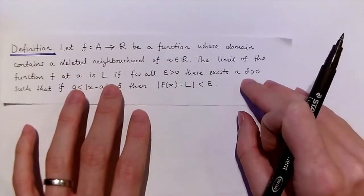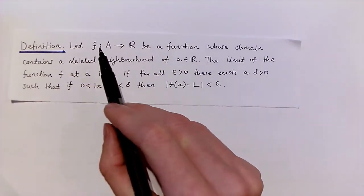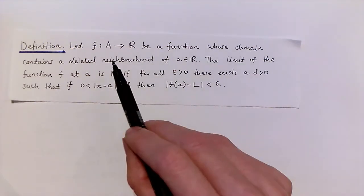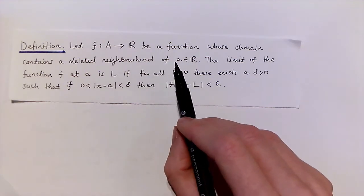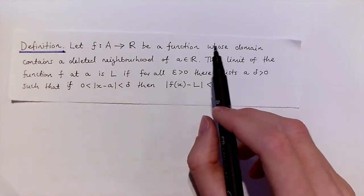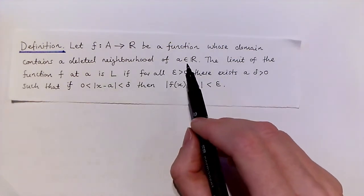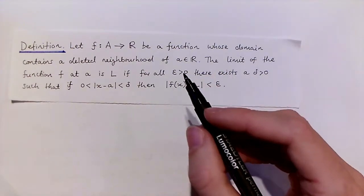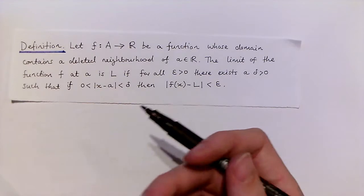Let's start by reading this definition. Let f be a function from capital A to the real numbers, whose domain contains a deleted neighbourhood of the point a. Remember that a deleted neighbourhood of a is simply an open interval around a, but with a itself removed, or deleted.